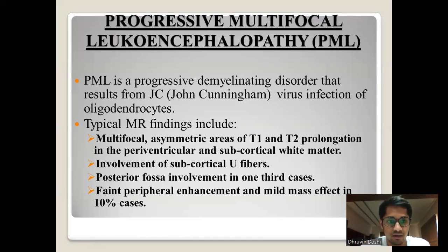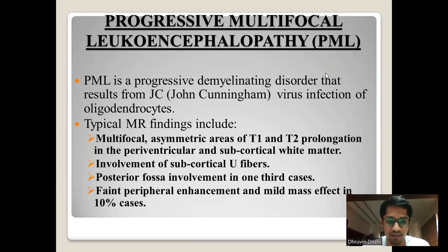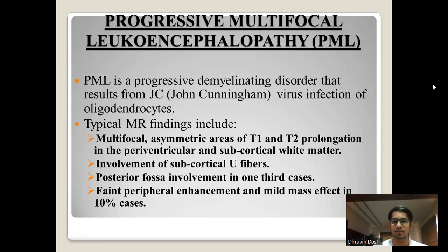The second case is progressive multifocal leukoencephalopathy, PML. PML is a progressive demyelinating disorder that results from JC virus infection of oligodendrocytes. MR findings include multifocal asymmetrical areas of T1 and T2 prolongation in the periventricular and subcortical white matter, involvement of subcortical U-fibers, posterior fossa involvement in one-third of cases, and faint peripheral enhancement seen in 10% of cases. Mass effect is rare, occurring in only 10% of cases.